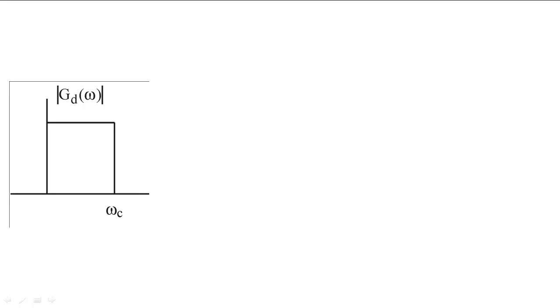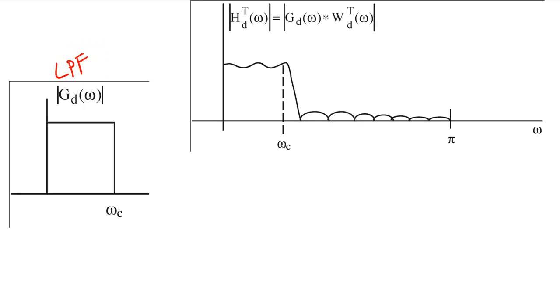Let's examine the frequency response of low-pass filters windowed by different functions. If we had the low-pass filter G sub D, then the truncated filter would have the following form. There would be ripples in the pass band and stop band. These transitions from the pass band to the stop band would also not be abrupt.